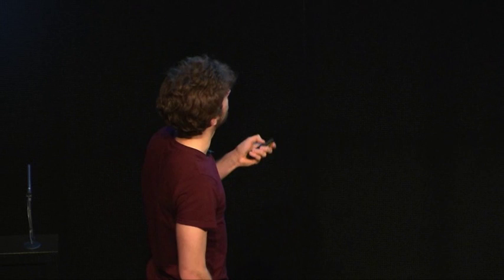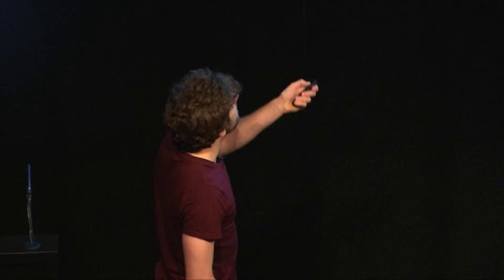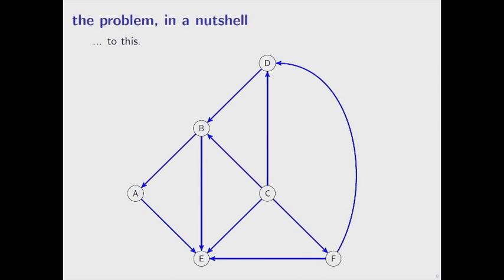In a nutshell, we are given some samples from the joint distribution of some variables — A, B, C, D, E, F — and we are interested in going from this to the causal structure underlying those random variables, the cause-effect relationships.